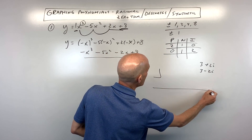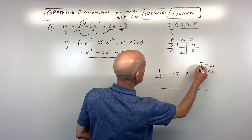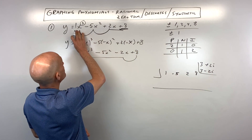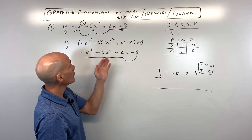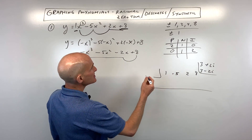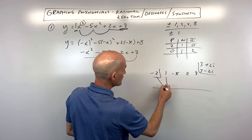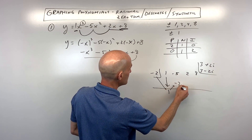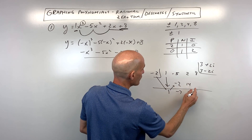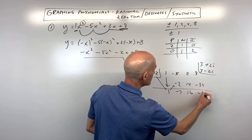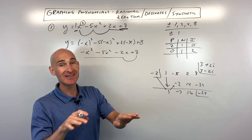We want to set it up so that we have the coefficients 1, negative 5, 2, and 8. Remember, if you skip over any terms — like if it went from x cubed to x — you'd have to put a placeholder of zero there. But we've got all the terms. Let's test negative 2. We bring down that first term, multiply on the diagonal, add straight down — multiply on the diagonal, add straight down — multiply on the diagonal, add straight down. And you see how this last number is not zero? That means that negative 2 is not a zero.